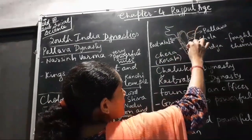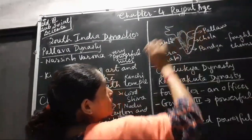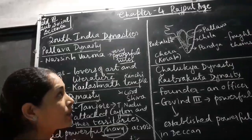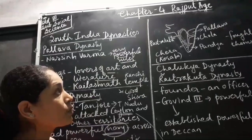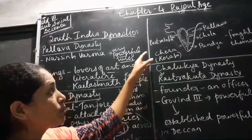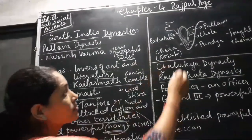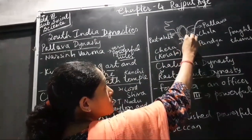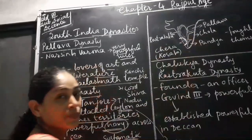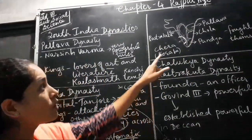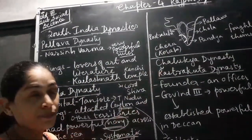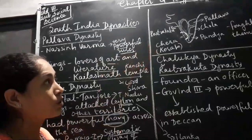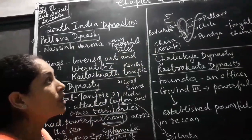This portion is all ruled by Rastrakutas. It was a major portion which was ruled by them, and this portion you can see — this is Chera. Now we call this place as Kerala, about which we are going to talk later on.